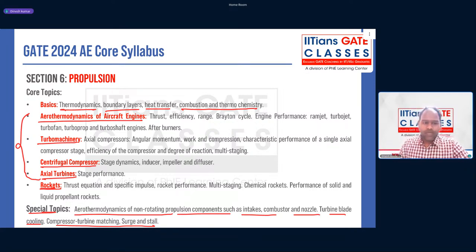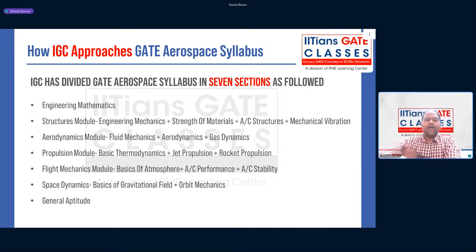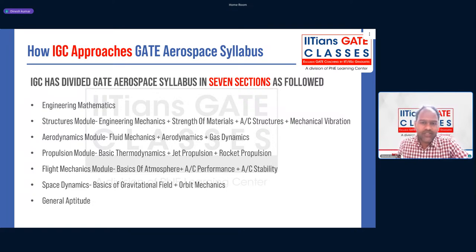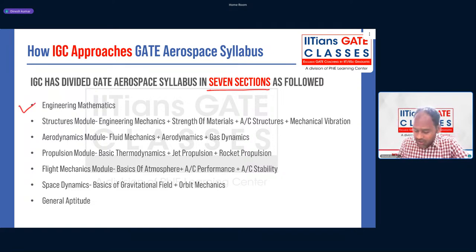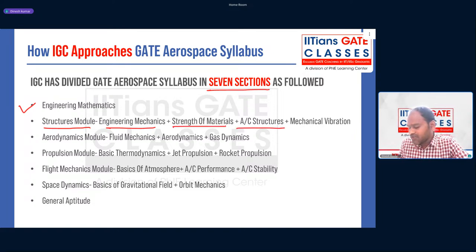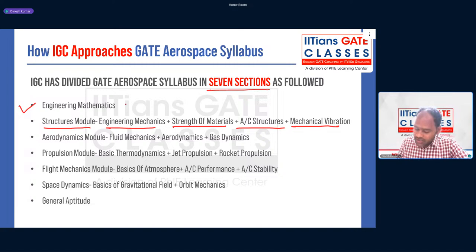Now let's see how IGC approaches the GATE aerospace syllabus. IGC always completes the syllabus from basics — from scratch — covering all core subjects. The syllabus is divided into seven sections. Engineering Mathematics is one section. The Structures module is divided into: Engineering Mechanics, Strength of Material, Aircraft Structures, and Mechanical Vibration. Every topic and every PYQ from the structures module is solved. IGC's fair batch started with engineering mathematics and engineering mechanics.